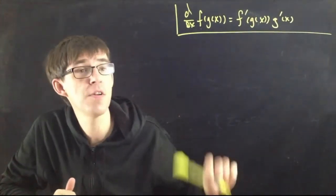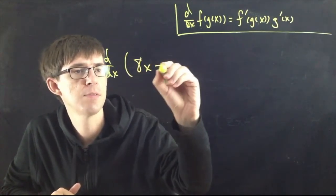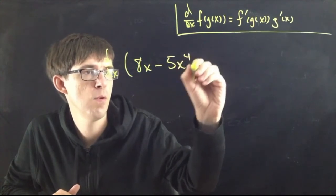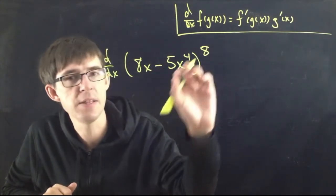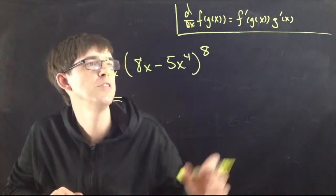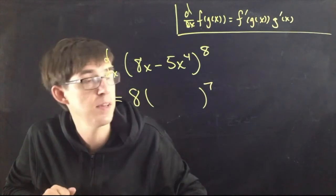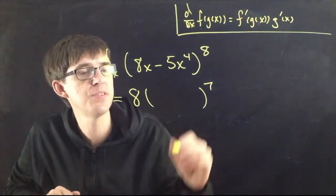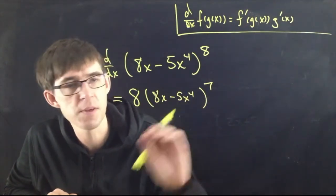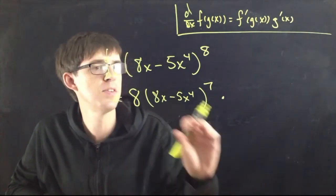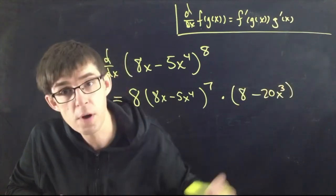Here's another very similar example: the derivative of (8x − 5x⁴)^8. The stuff inside is 8x − 5x⁴ and the outside is the eighth power. Taking the derivative: bring the 8 down, make it a 7th power, write the same thing on the inside (8x − 5x⁴)^7, then multiply by the derivative of the inside, which is 8 − 20x³. That's the chain rule.